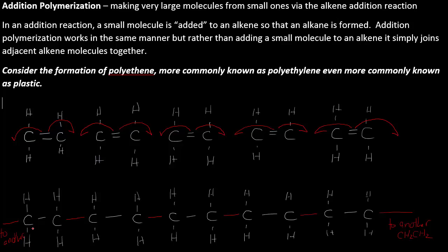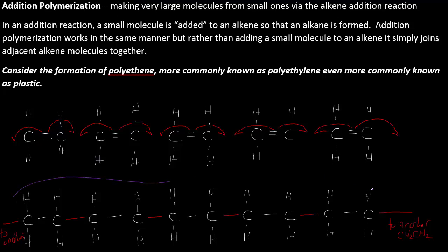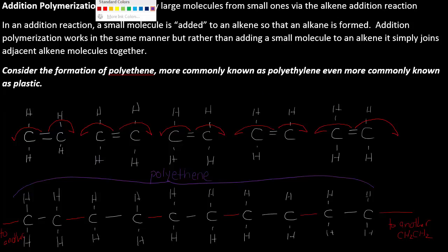This essentially goes on forever in each direction. The resulting molecule is known as a polymer — poly meaning many. There are many, many, many of the monomer units that have been linked together. The resulting chain is known as polyethene, named for the monomer from which it originates.